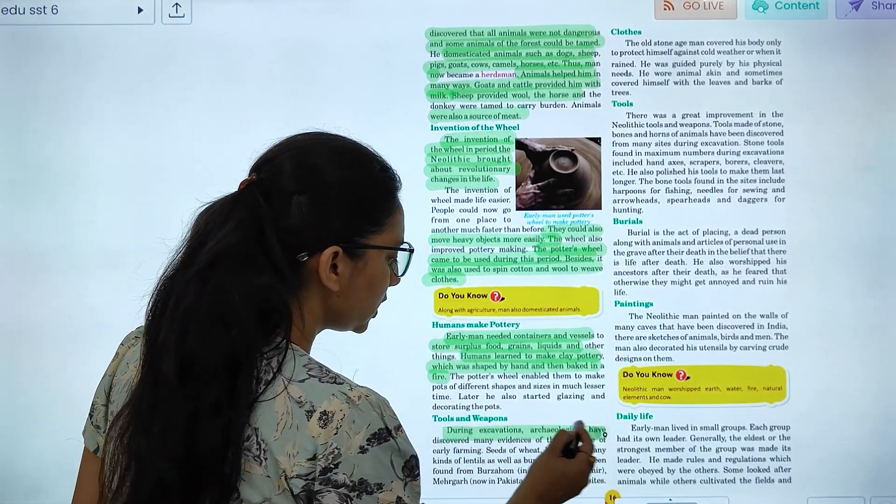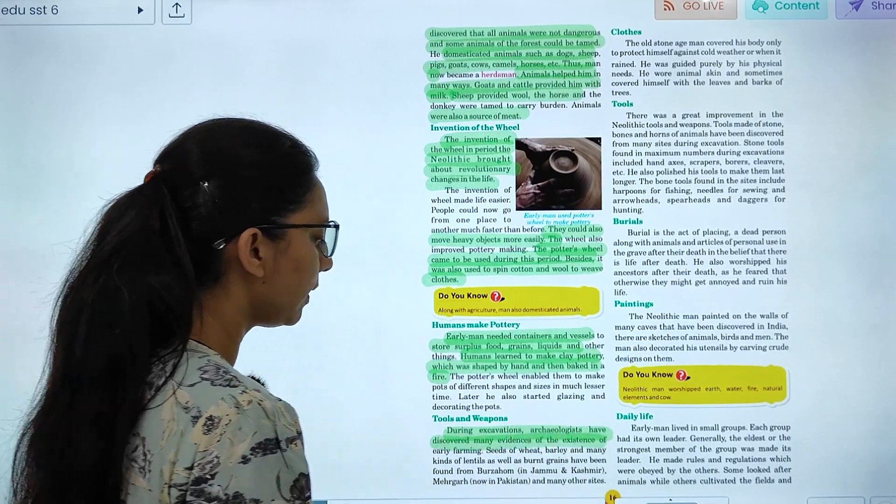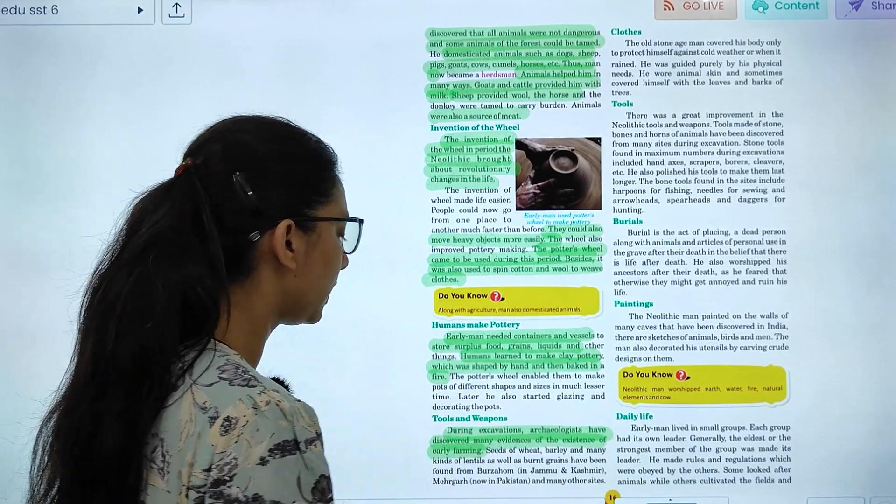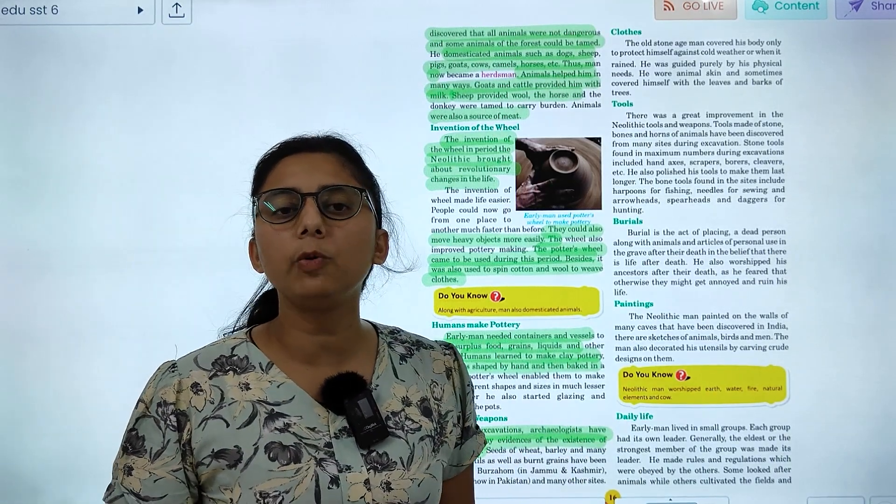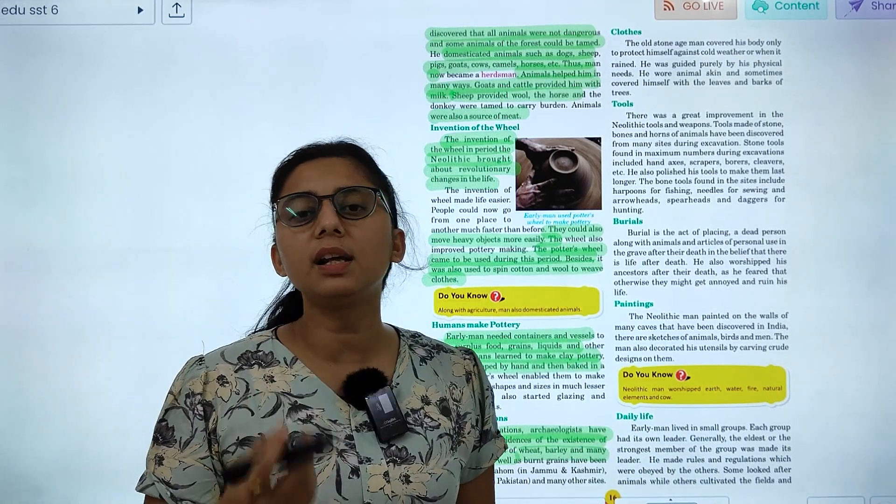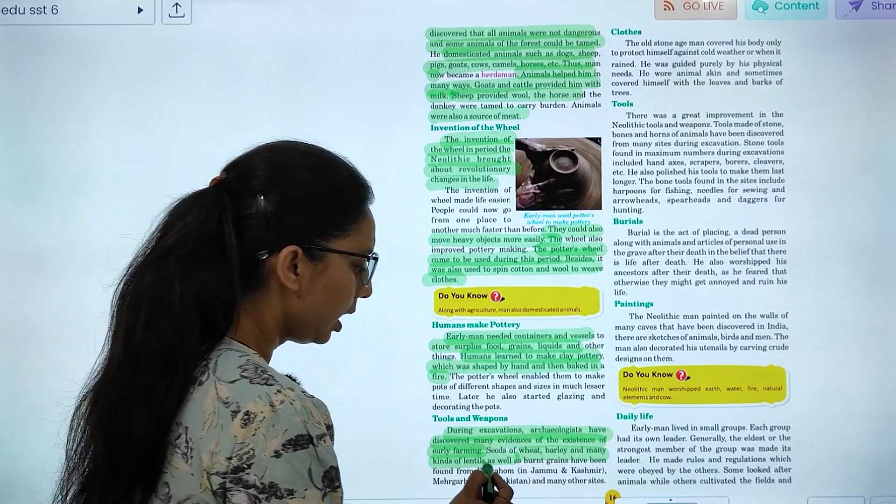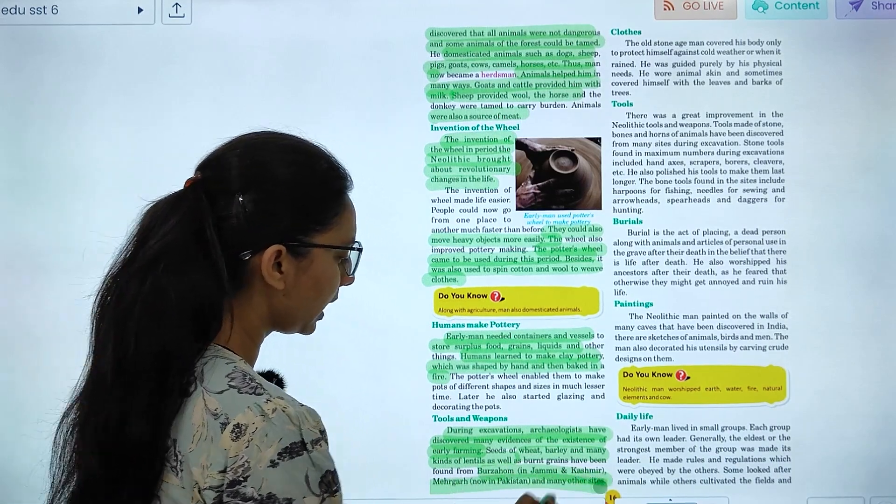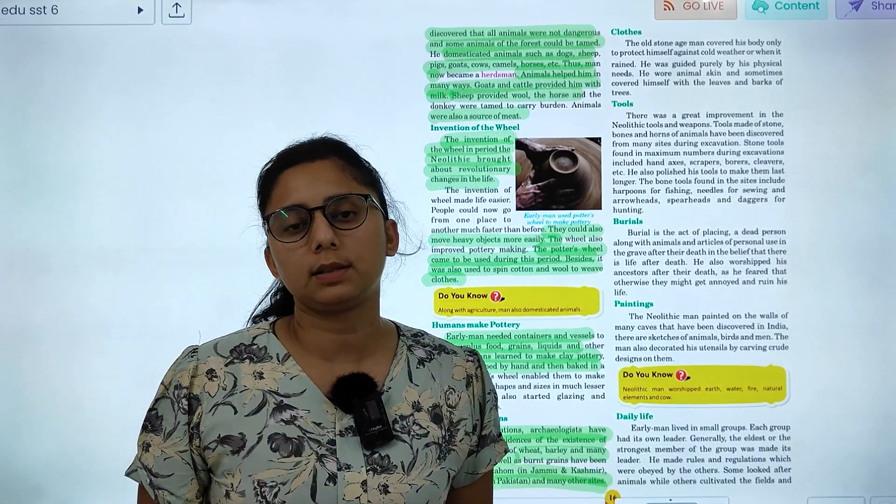During the excavation, archaeologists have discovered many evidence of the existence of early pottery. Seeds are like wheat, barley, and legumes. Like burnt grains. Sites like Burzahom Kashmir, Meher, and many other sites.